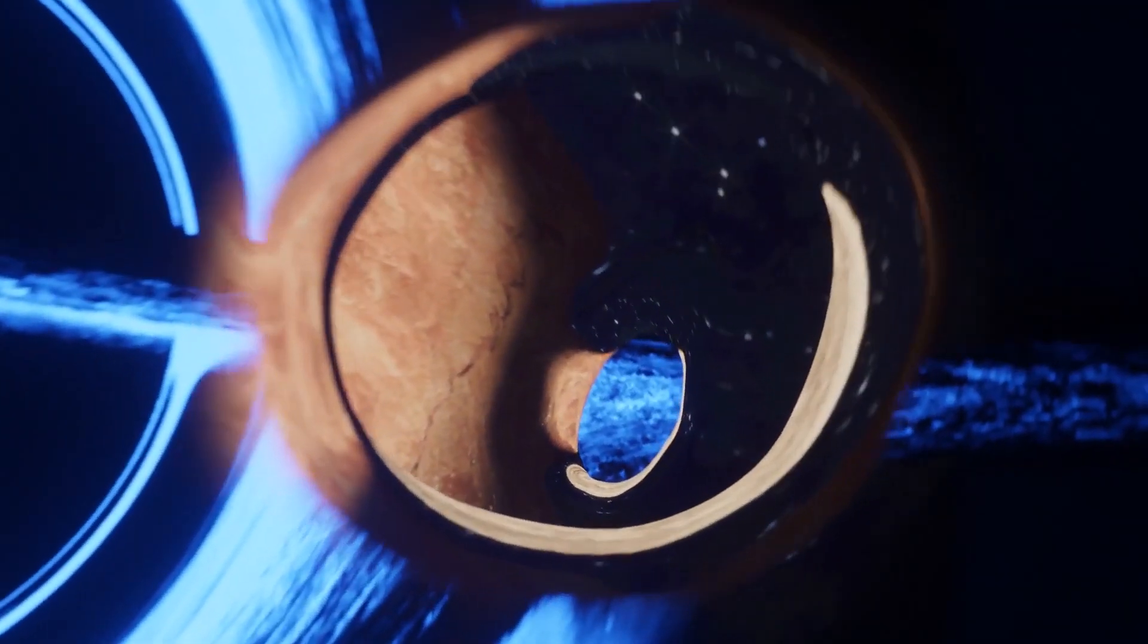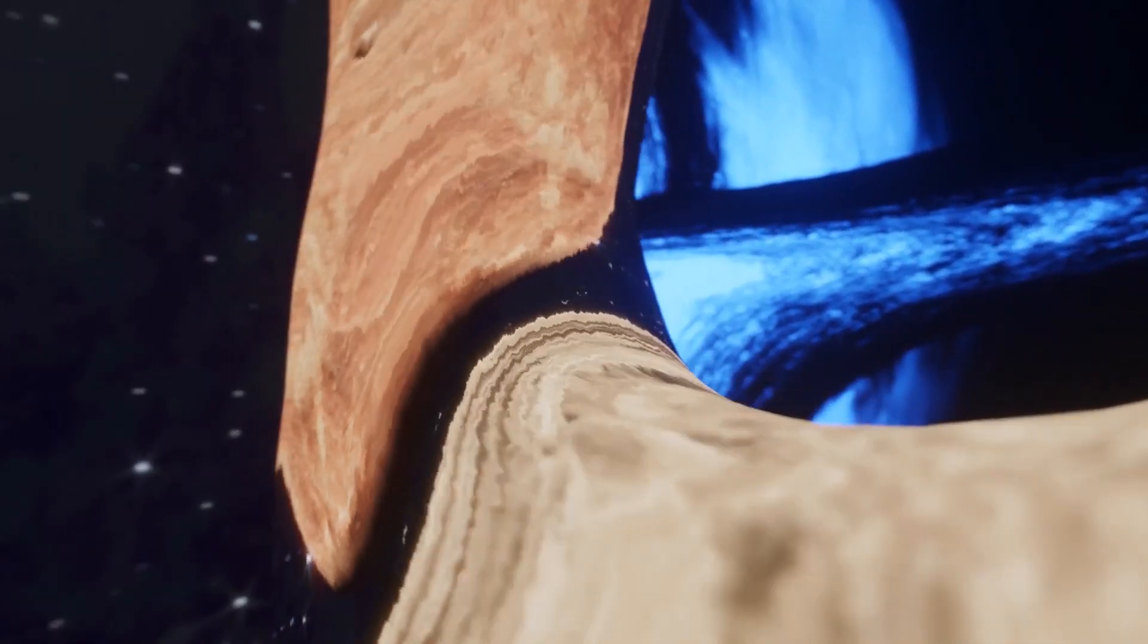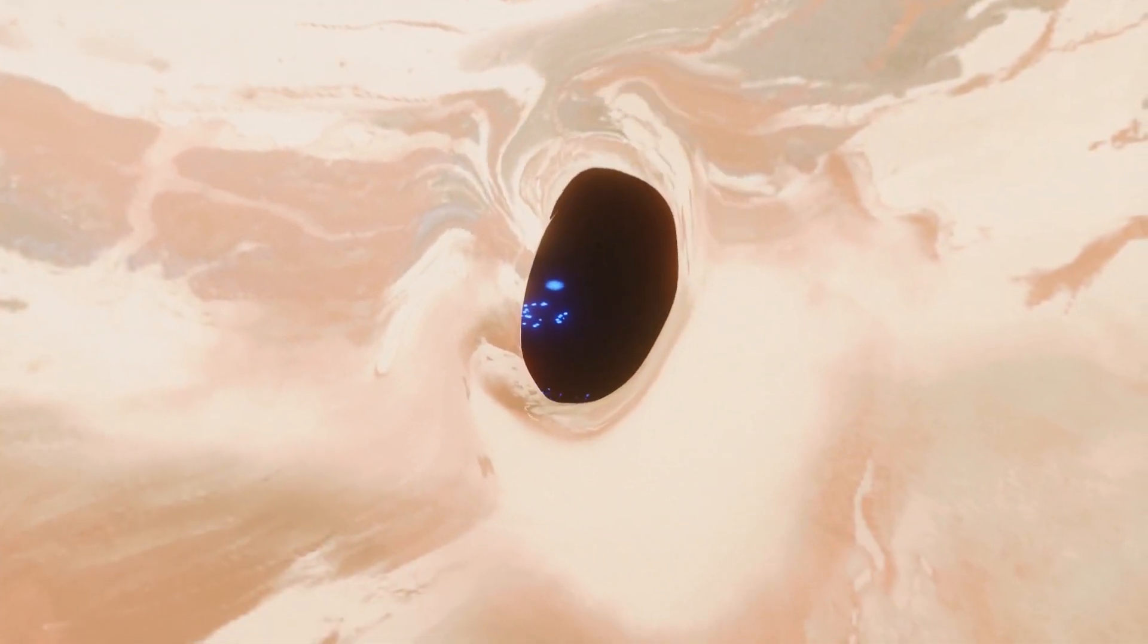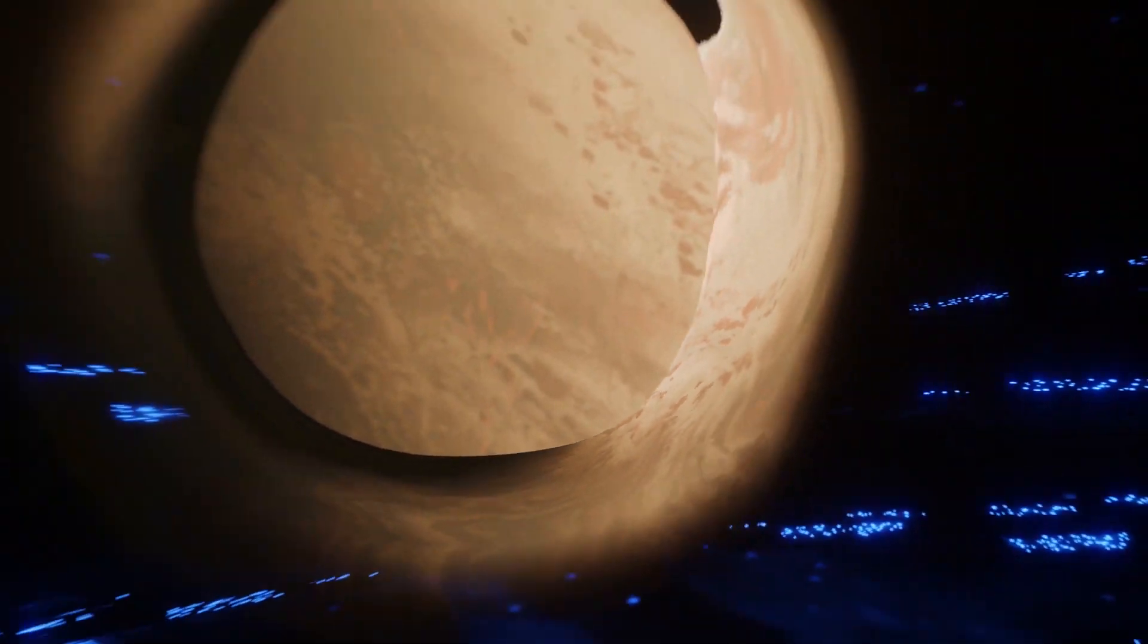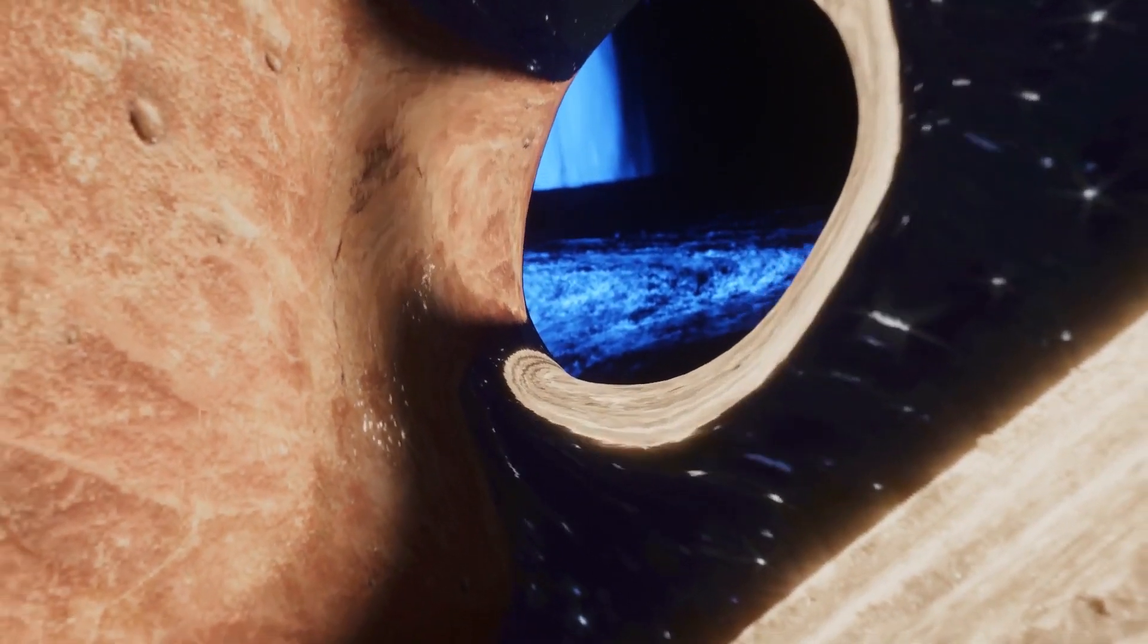Massive bodies, such as stars or black holes, are especially effective in causing significant gravitational lensing due to their immense gravitational attraction. Black holes, in particular, represent one of the most extreme examples due to their incredible mass and compact size, leading to very pronounced lensing effects.